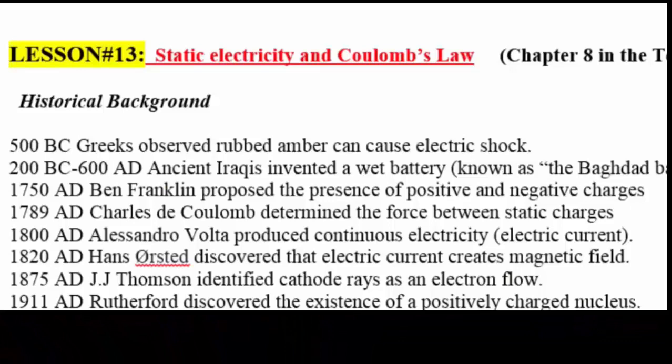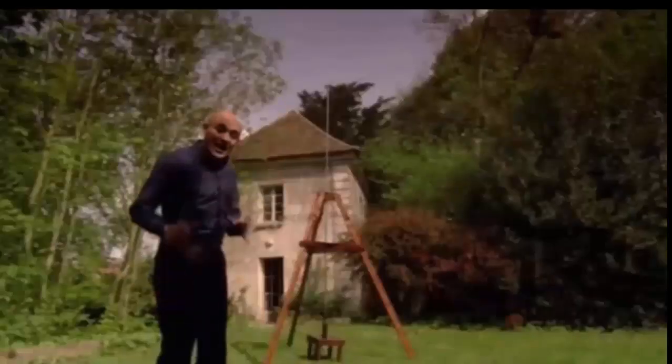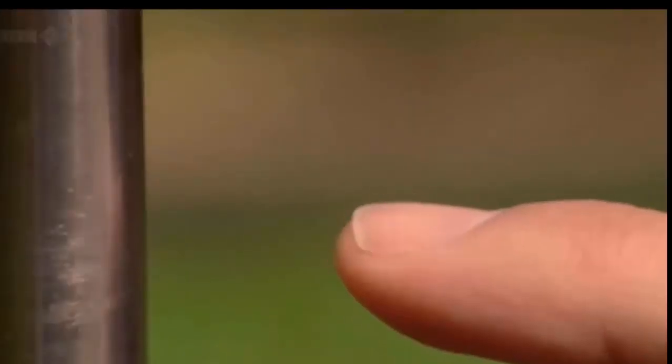In 1750 AD Ben Franklin proposed the presence of positive and negative charges. Ben Franklin proposed an experiment to prove that lightning is actually electricity. This experiment was carried out in France where a pole was erected in order to harness the electricity of lightning and this pole was inserted inside a glass bottle. When lightning hit the pole, it was noticed that approaching your finger, a shock was created between the finger and the pole.